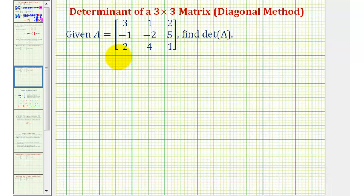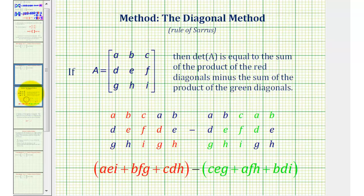Welcome to the first example of finding the determinant of a three by three matrix using the diagonal method. To use the diagonal method to find the determinant of a three by three matrix, we first want to form a three by five arrangement of elements using the elements from the given matrix.